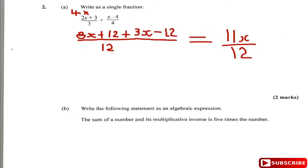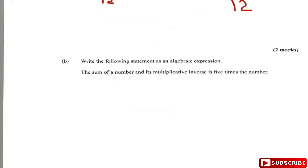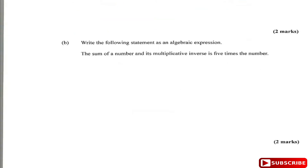Now question B. Question B involves converting from algebraic phrases to a mathematical statement. It says: write the following as an algebraic expression — 'the sum of a number and its multiplicative inverse is 5 times the number.' Let's call the number a.